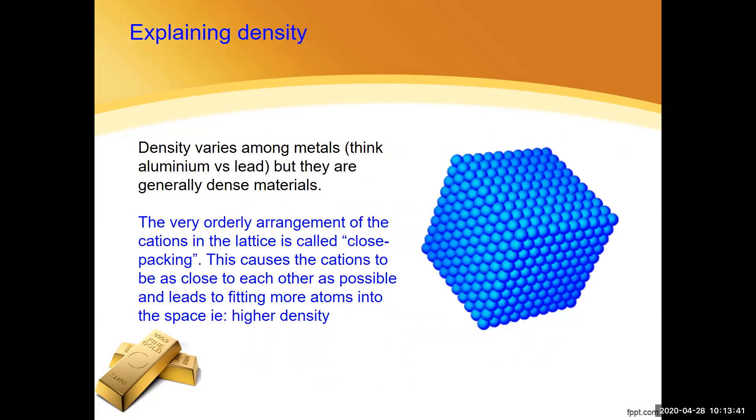Density. Metals vary in density. You know that aluminum is much lower density than lead. Lead is high density. When you're in year eight, you did a whole experiment where you looked at the density of lots of different metals and you found that they're all different. However, generally we say they're high density in the way that they're not gases and not liquids. So they're quite dense materials. And that's because of that very orderly way that the metal ions pack into the lattice. It's actually called close packing. And there are different ways that close packing can occur. There's cubic close packing and hexagonal close packing. But for the purposes of explaining density, it's the close packing of the lattice causing the cations to be as close as they possibly can. And that just means you fit more stuff into the same particular volume. And of course, that gives you a higher density.